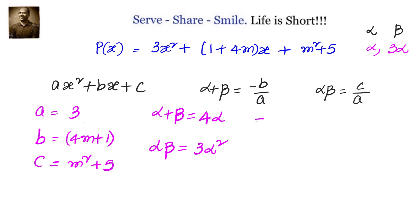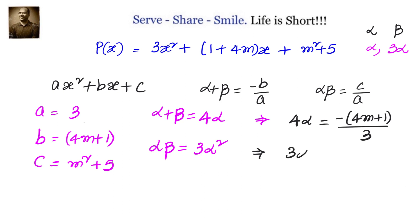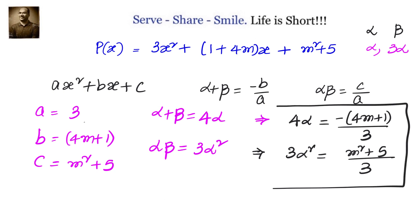First condition: alpha plus beta is 4 alpha, and that equals minus b by a, so 4 alpha equals minus (4m+1) divided by 3. Second condition: alpha times beta is 3 alpha², and that equals c by a, which is (m²+5) divided by 3.